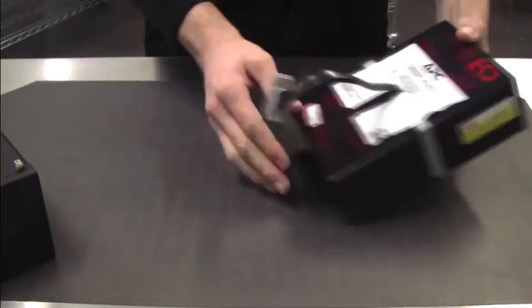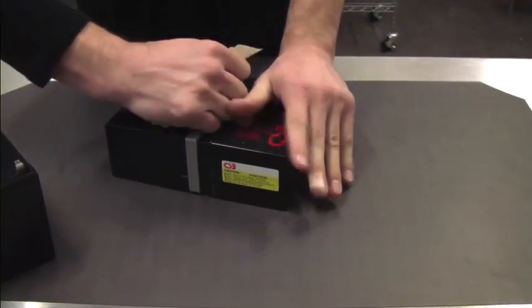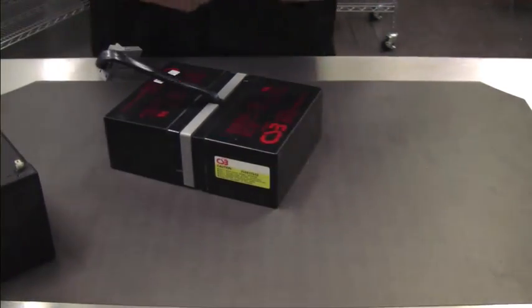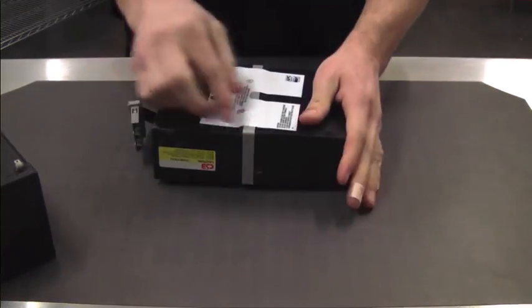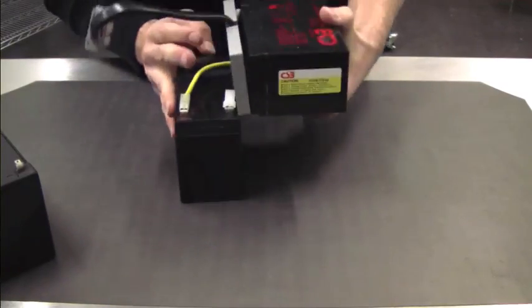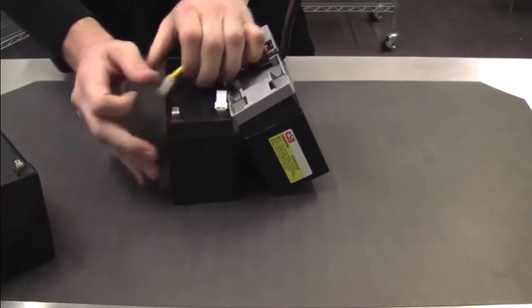Begin by removing the APC sticker that's holding the two batteries together. Split the batteries apart and note the wiring. Begin removing the wiring from each battery.